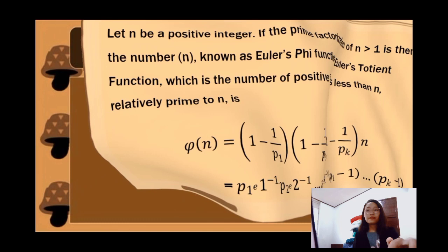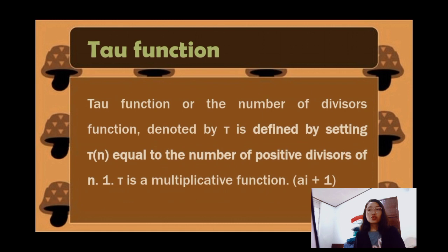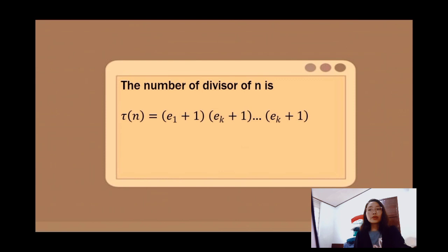We'll proceed now with the tau function. The tau function is the number of divisors function, denoted by τ(N), and is defined by setting τ(N) equal to the number of positive divisors of N. Tau is a multiplicative function. The formula for the tau function is: τ(N) = (e₁ + 1)(e₂ + 1)···(eₖ + 1).